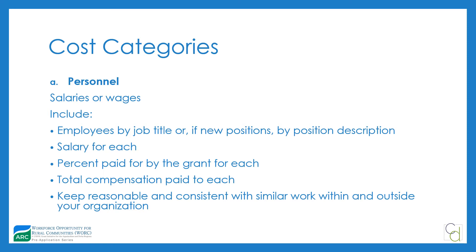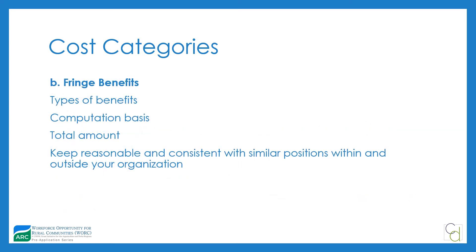Make sure salaries are reasonable and consistent with similar work within and outside your organization. The second category is fringe benefits, which should be reasonable and consistent with what similarly situated individuals within your organization and broader labor market receive. In your budget narrative, explain the types of benefits included and how you arrived at the number — whether you're applying a percent of benefits or using an organizational standard. On the SF-424A, include the total fringe covered by grant funds over the entire performance period.